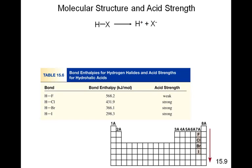There is a pretty simple way, and it deals with bond strength. We might think that because fluorine is the most electronegative, then chlorine, then bromine, and then finally iodine the least electronegative, that the strength of the acid might be dependent upon the electronegativity of the non-hydrogen element. Because the more electronegative it is, the more polar this bond is going to be. But it turns out it's not a matter of polarity when it comes to these binary acids — it's a matter of the strength of the bond.